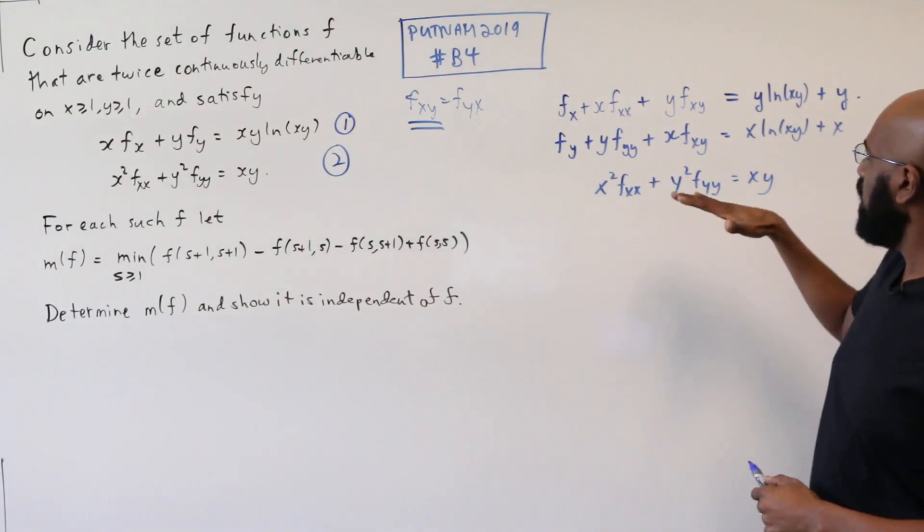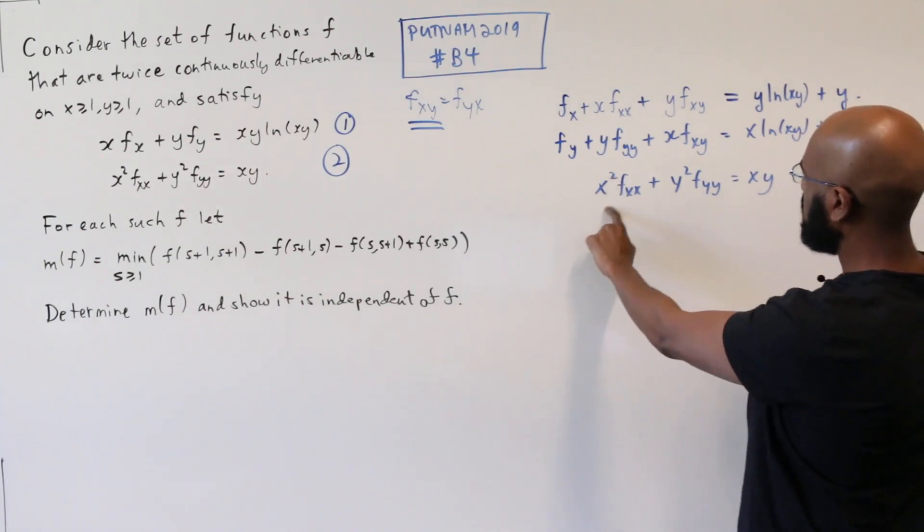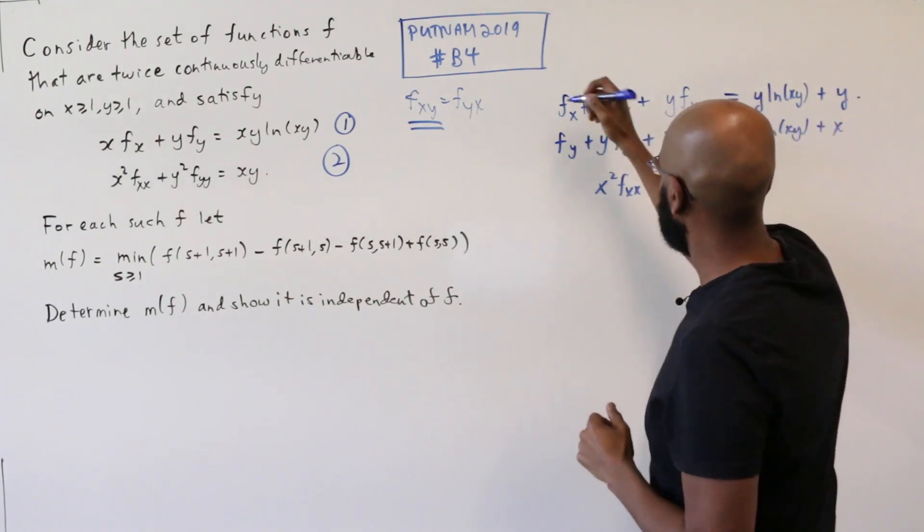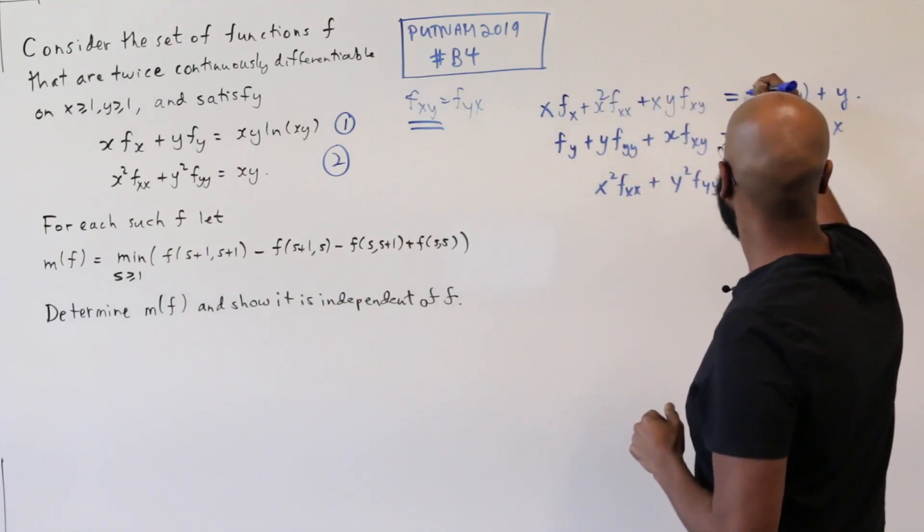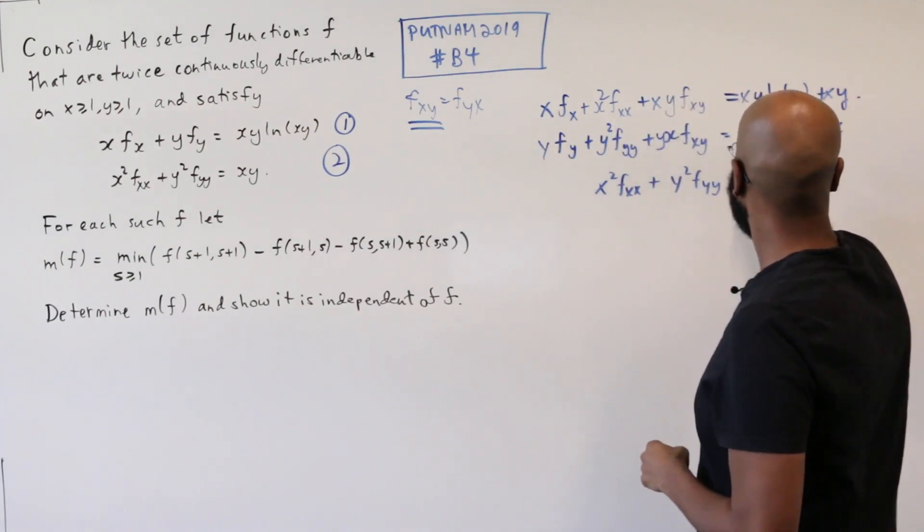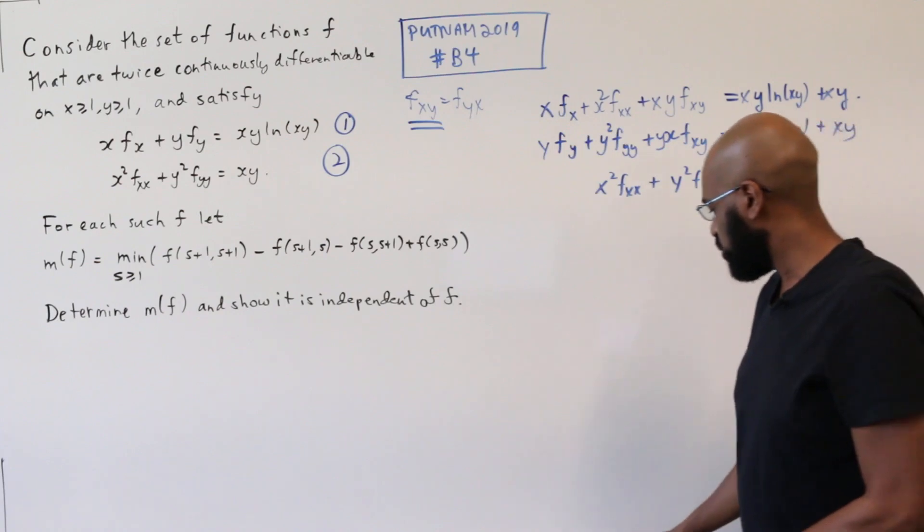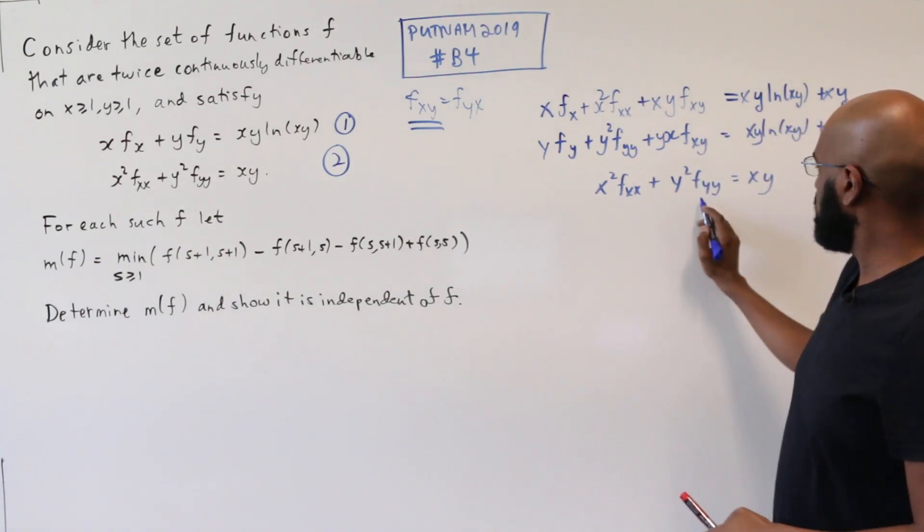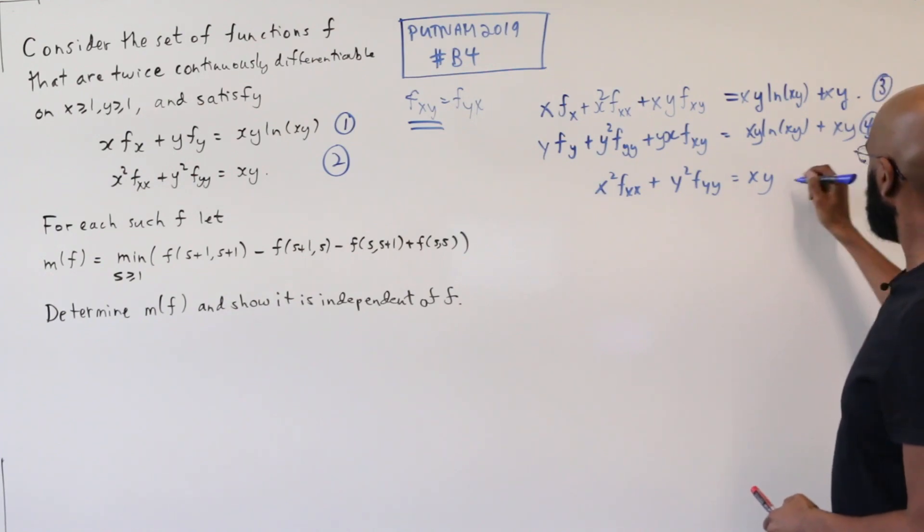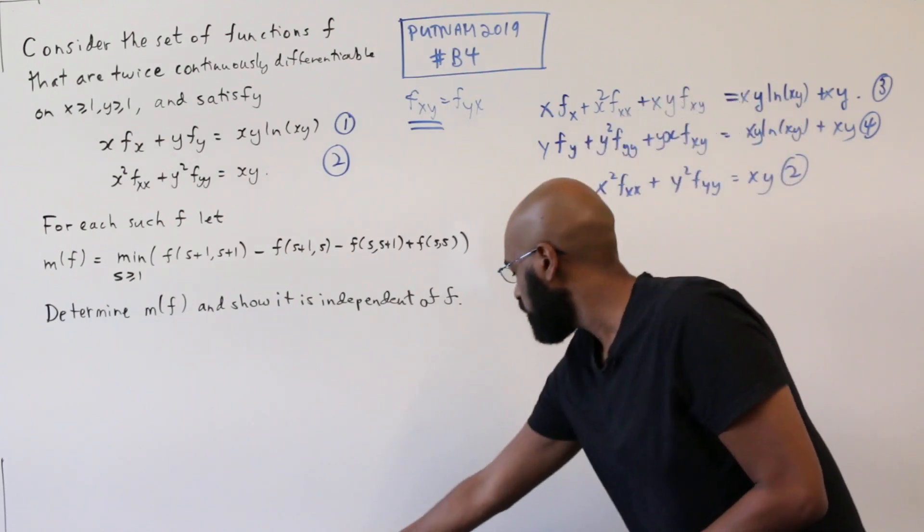So if our goal is to use these somehow to figure out some more information about the function at hand, we notice we have an x squared fxx here, and we have an x fxx here, so we might as well multiply this equation by x to maybe eliminate things. So we'll multiply by x throughout, and we get this, and then similarly we'll multiply the second equation by y and get something like this. All right, so let's make some observations. So if we want to eliminate this expression on the left-hand side, we need to add these and subtract this off. So if we call this equation 3 and equation 4, this is equation 2 originally. Let's observe what happens when we take 3, add 4, and subtract 2.